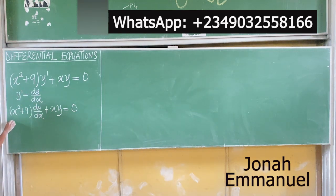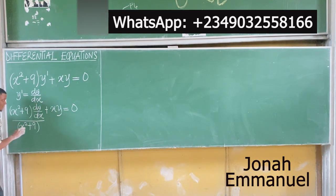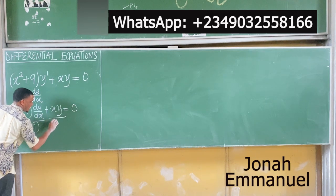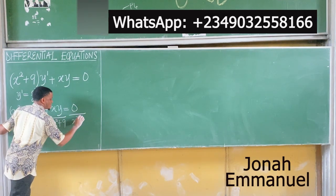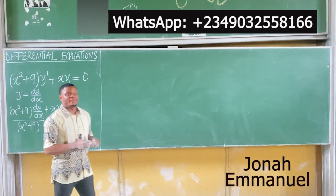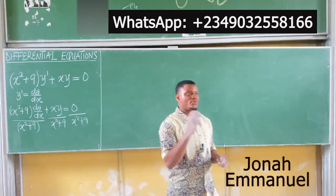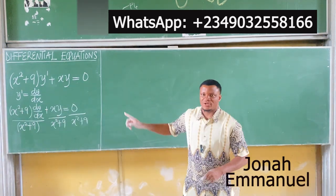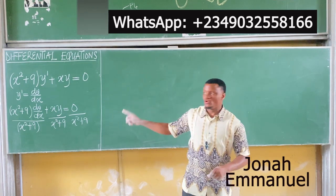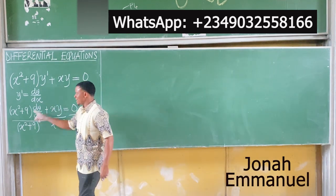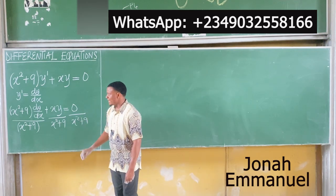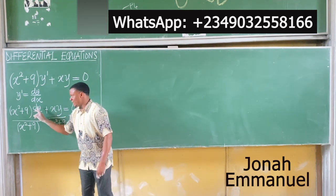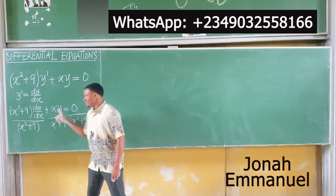That means I'll have to divide everything by the coefficient of dy/dx. So from here, I'll divide this by x squared plus 9, divide this by x squared plus 9, divide this by x squared plus 9. I'm very intentional about the way you copy your notes — don't copy your notes as what you're seeing here.